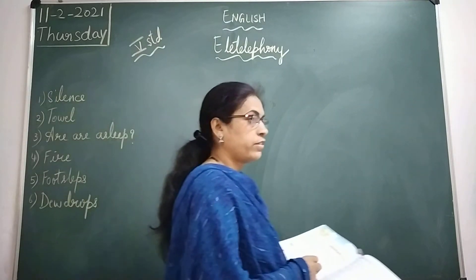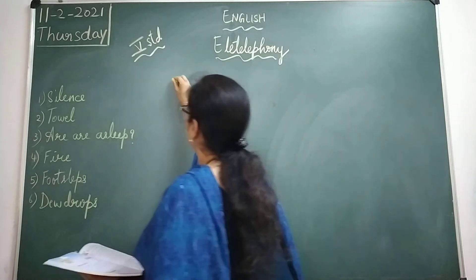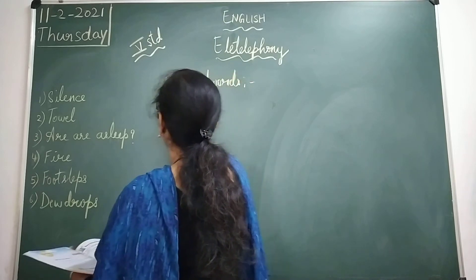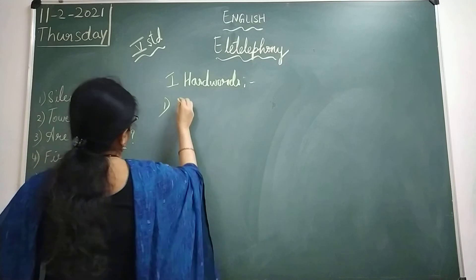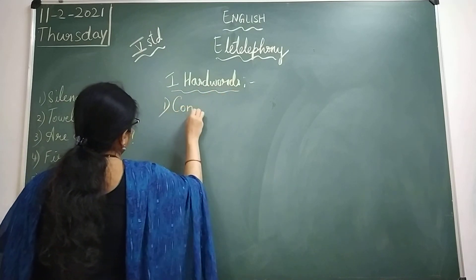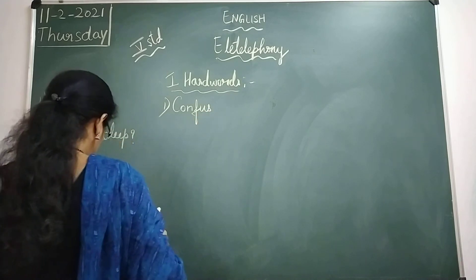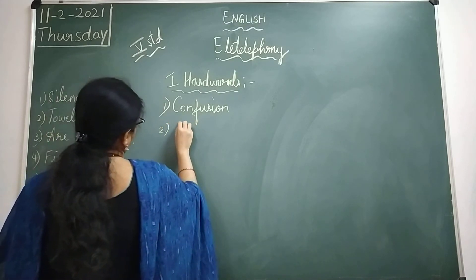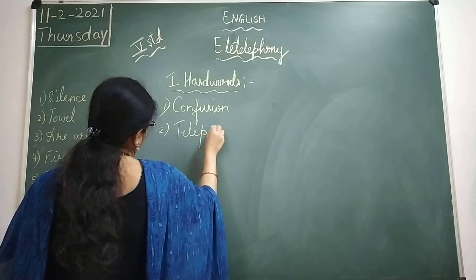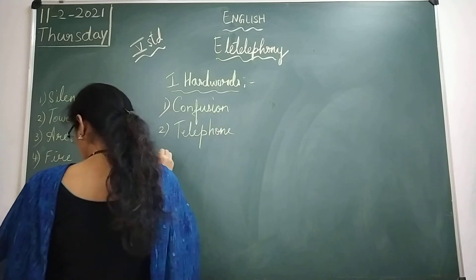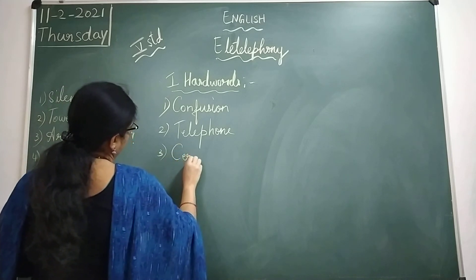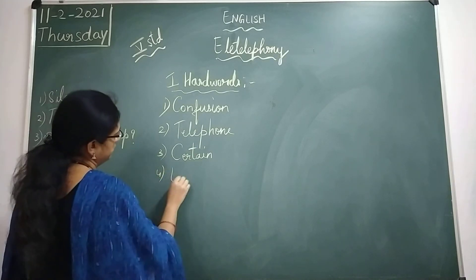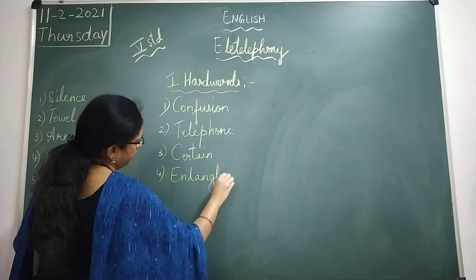So after writing these riddles, you can copy the hard words in your class work. Only a few hard words are there. The first word is Confusion, the second word is Telephone, the next word is Certain — C-E-R-T-A-I-N, and the fourth word is Entangled — E-N-T-A-N-G-L-E-D.